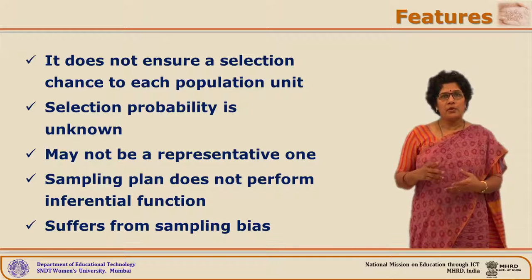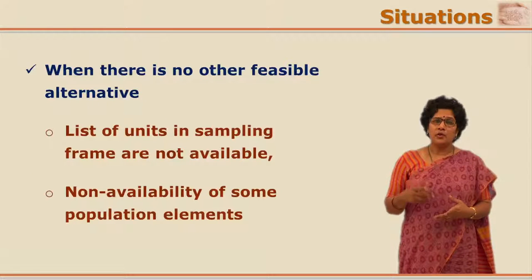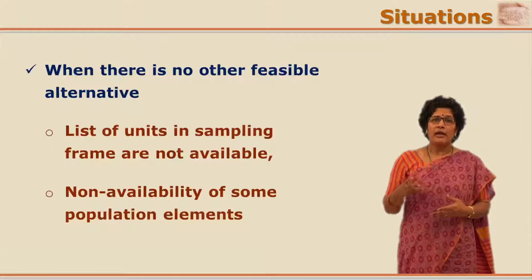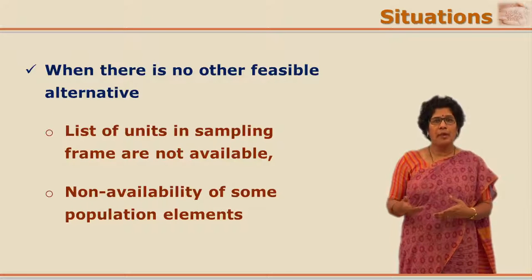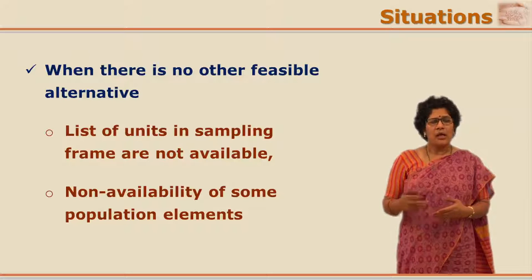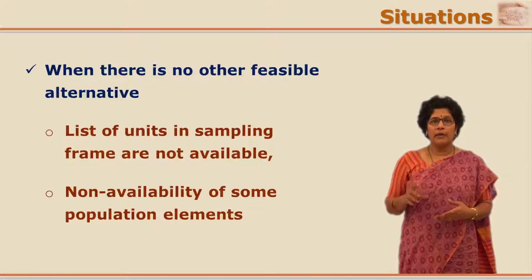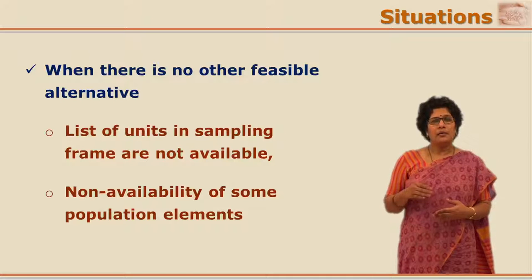If there are so many limitations while using non-probability sampling methods, then why do we select this kind of sampling method in a research? There are certain situations that demand the use of non-probability sampling methods, or at times one is left with no other choice. Some situations could be where most of the population units are not readily available — in such cases, it is advisable to go for non-probability sampling methods.